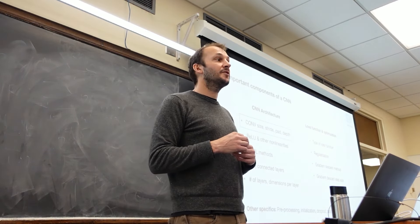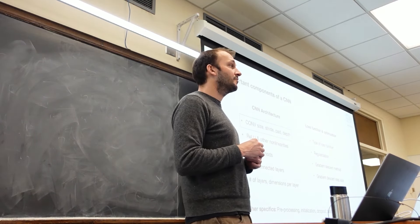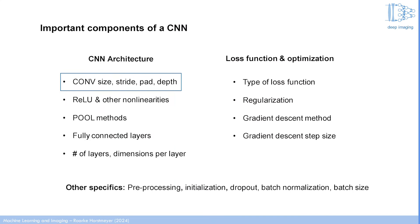More often than not, when you encounter problems, it's generally on the right side of the screen — the loss function and optimizer — that are going to be your easiest things to change to seek solutions. The last category is at the bottom: other specifics. There are small things you can add or change within your neural network to get better performance, which we'll cover mostly next class.